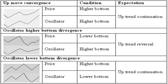When the oscillator creates a higher bottom while the price makes a lower bottom, they diverge. This is mostly found at the end of a downtrend, indicating an uptrend reversal. When the oscillator has a lower bottom while the price sets a higher bottom, they also diverge. This is mostly found in a price uptrend after a price correction, indicating a continuation of the uptrend.